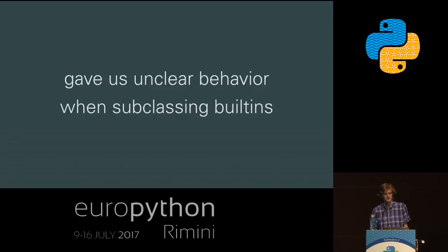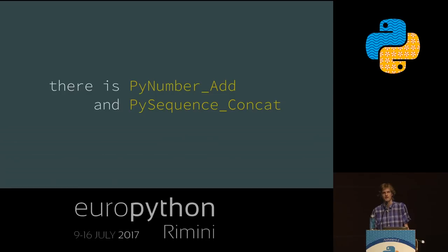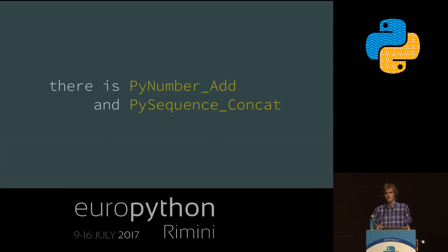The simple gist is: there is no plus operator. The reason is that when the language was originally created, there was no standardized object model. There are two internal methods: PyNumberAdd and PySequenceConcat. PyNumberAdd will add numbers first, then concatenate sequences. PySequenceConcat will first attempt to concatenate sequences and then fall back to adding numbers. This doesn't make a lot of sense anymore, but it still defines some of the effects we get in the language.